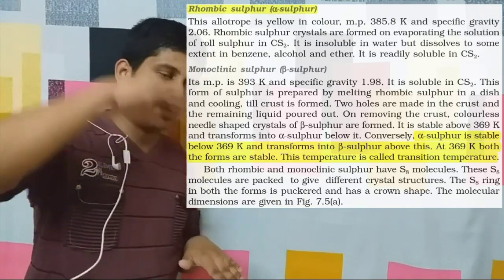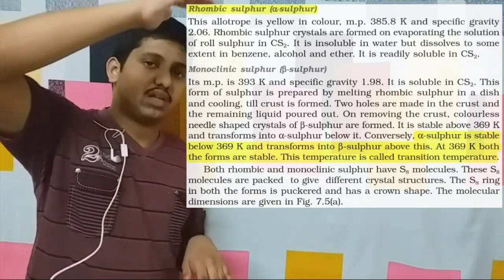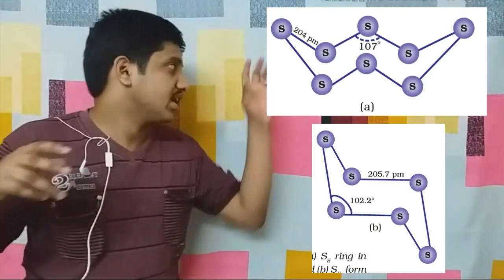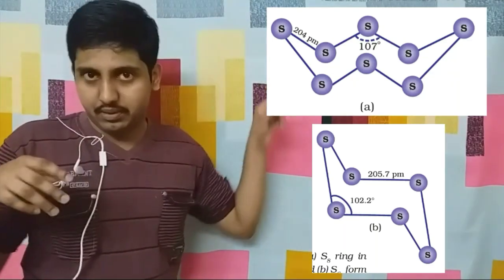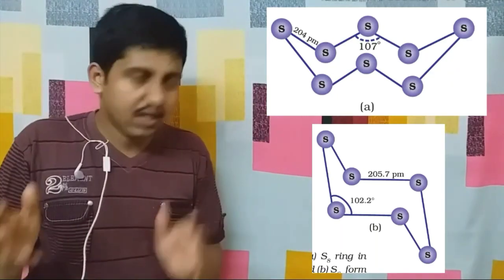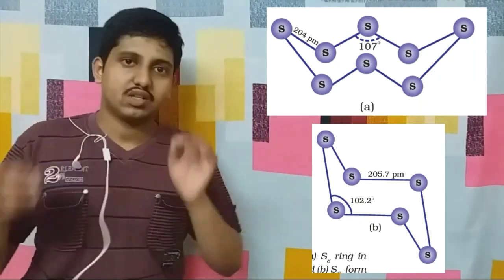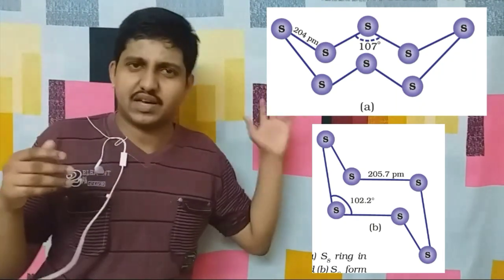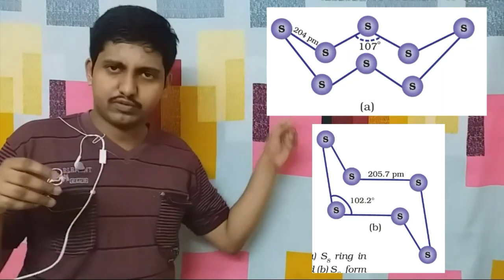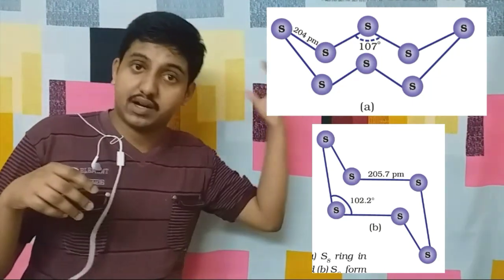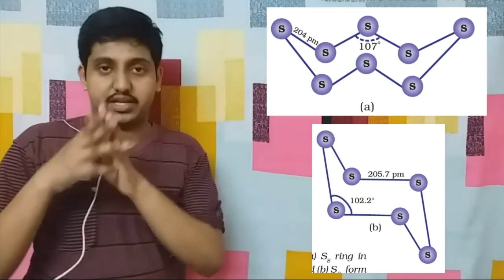At 369 Kelvin, both alpha and beta sulfur coexist. Above 369 Kelvin, it is beta sulfur. You also have to study the chair forms and crown forms of sulfur — that is S6, S8, etc. — and the bond angles: 107 degrees in the crown form and 102.8 degrees in the chair form. Those bond angles are important.